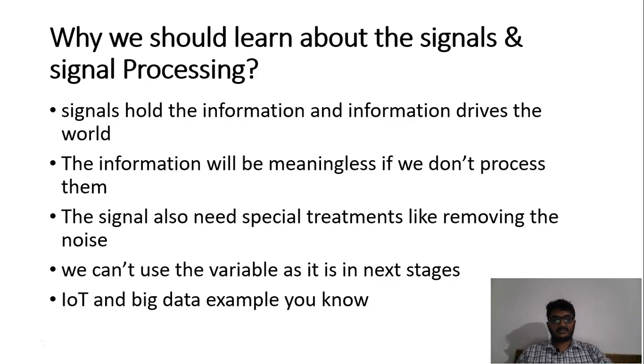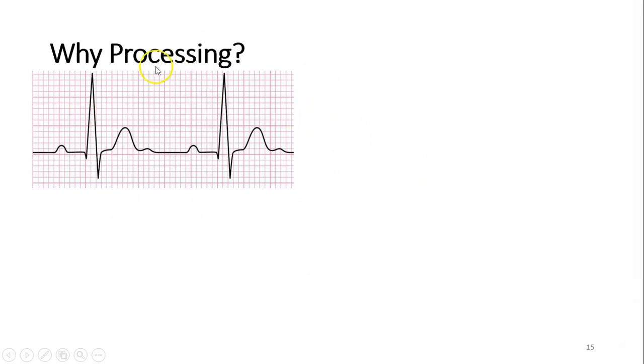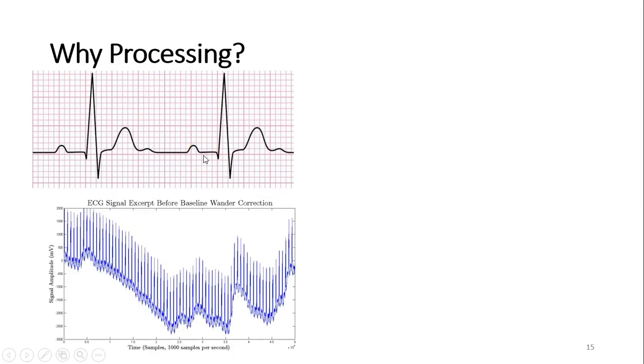Let us take one more example, the ECG. We know the ECG looks like this. But from the sensors, we do not get a smooth graph like this. In fact, we get a graph like this. Here, as a human being, we can understand that this signal is actually present in this.